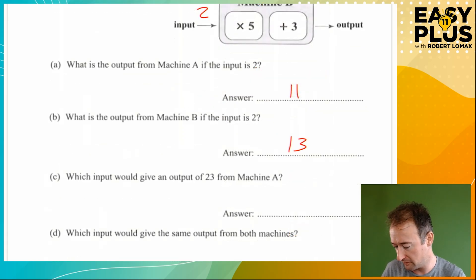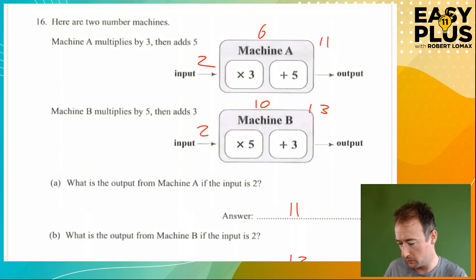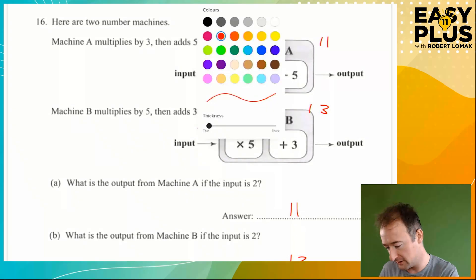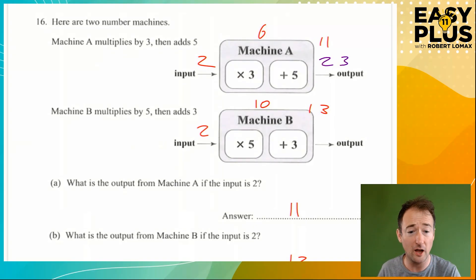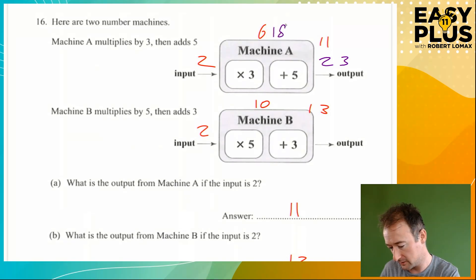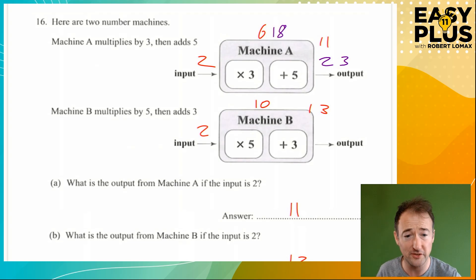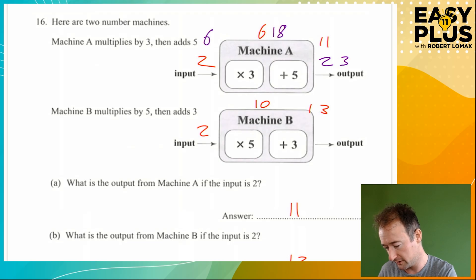Which input would give an output of 23 from machine A? So we're going to have an output of 23. If we undo the adding 5 — that's subtracting 5 — we get back to 18. And we undo the timesing by 3, so we divide by 3. 18 divided by 3 is 6. So that's our answer: 6.